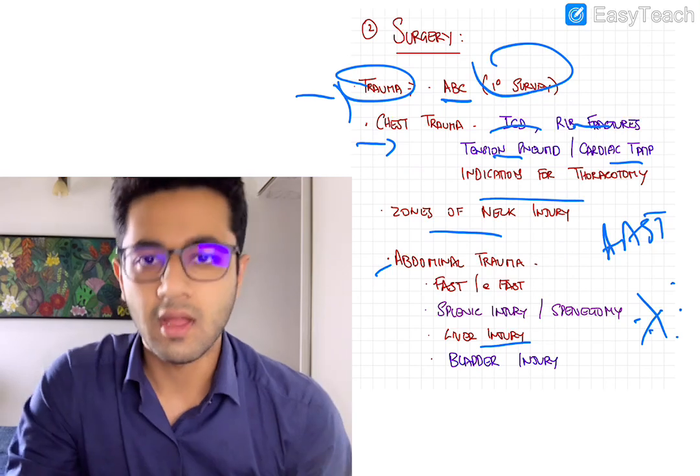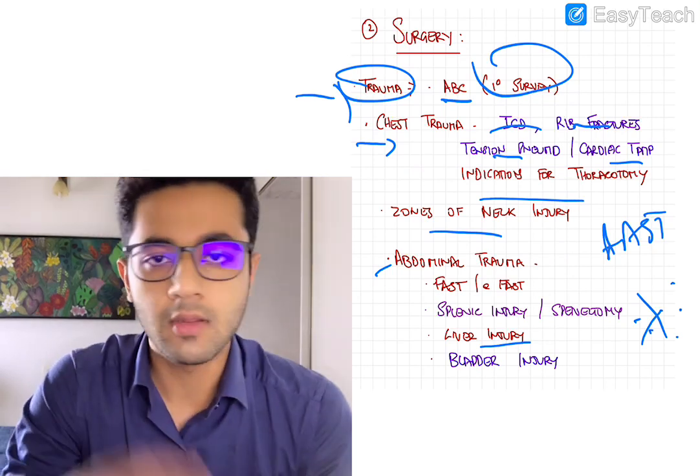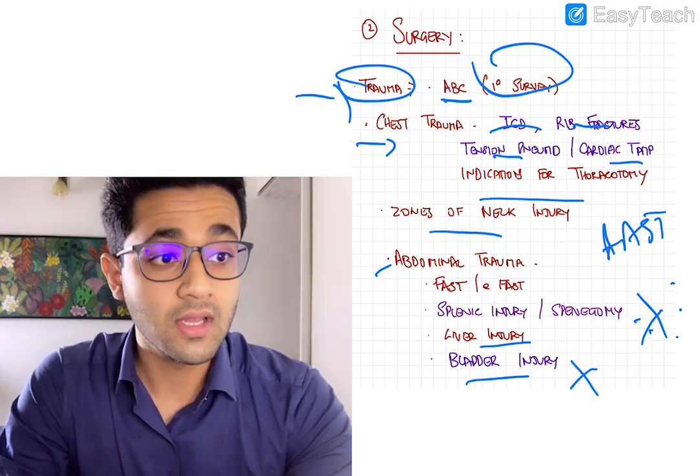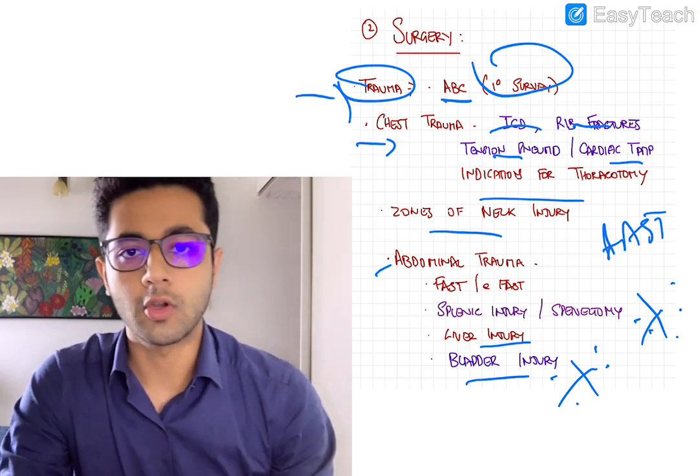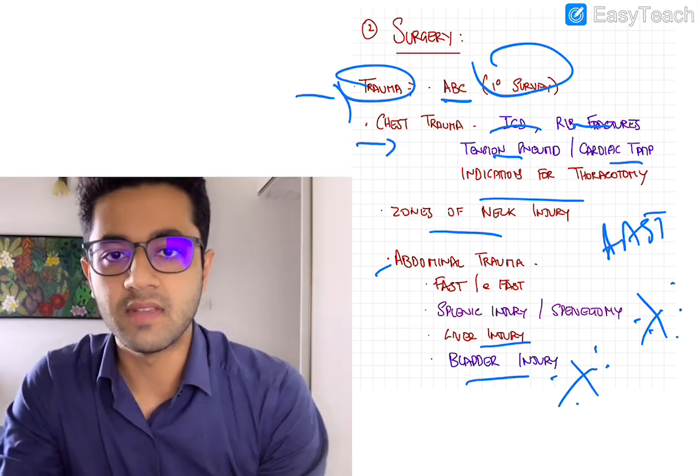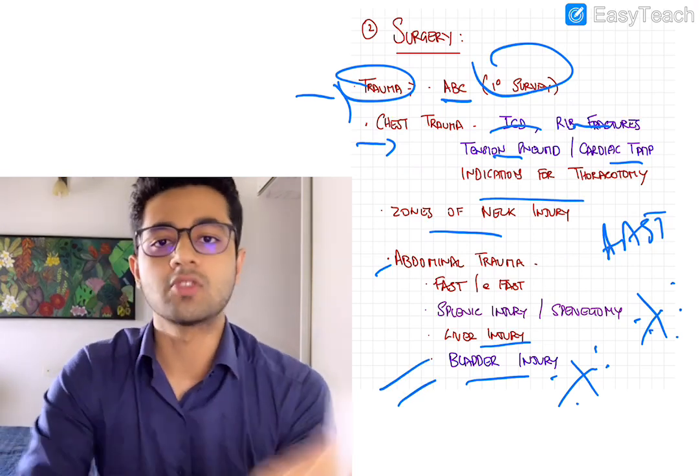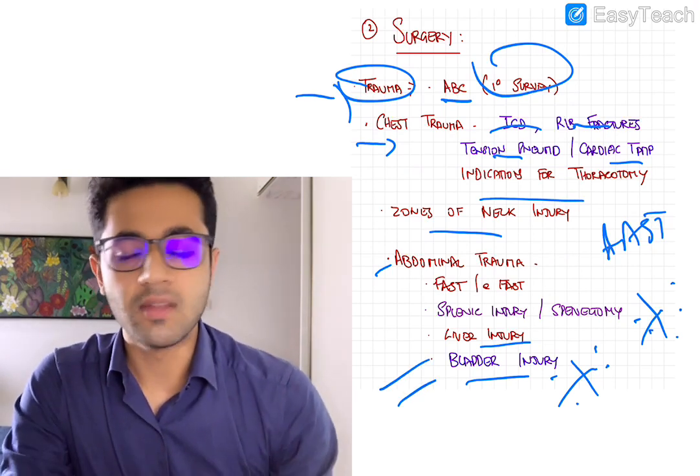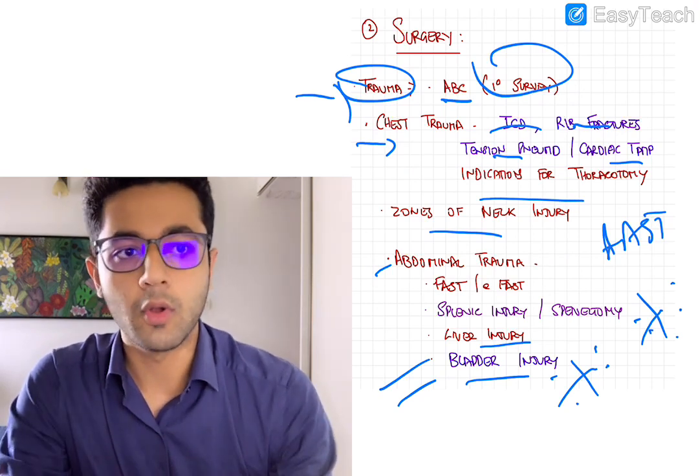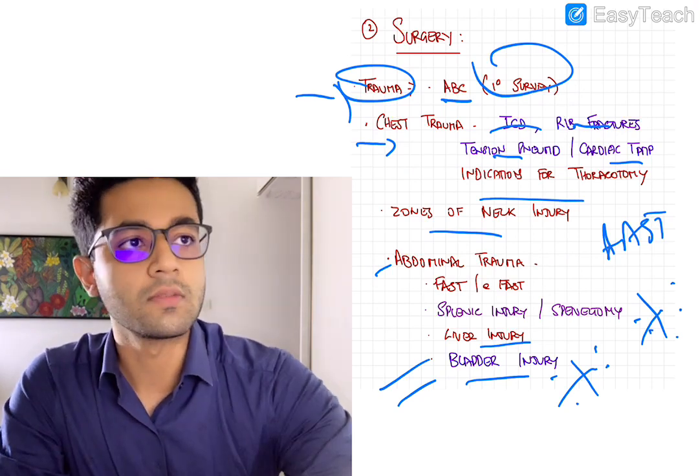Liver injury, not as important, but splenic injury, but good to know. Bladder injury, especially your intraperitoneal and extraperitoneal and whatnot is very important. So knowing about pelvic injury and bladder injury is important. Frequently neglected, you know, everyone tends to focus on liver and spleen. But bladder is as important, if not more important. So don't miss out, bladder injuries.